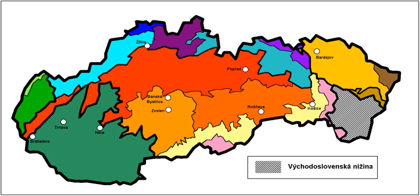It consists of the following two parts: the Eastern Slovak Hills in the west and the north, and the Eastern Slovak Flat in the middle, east, and south.